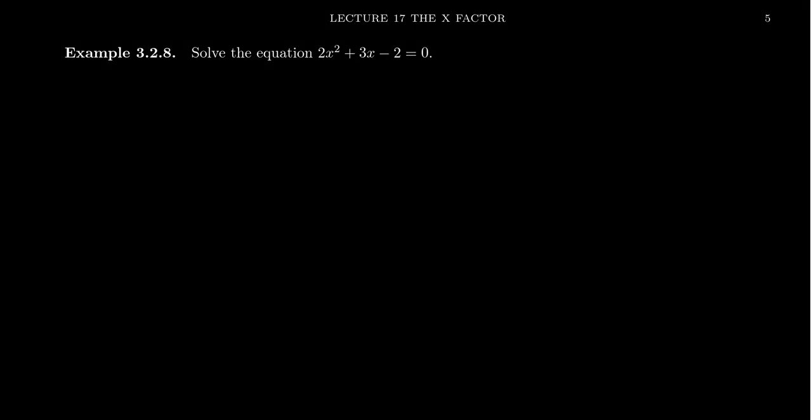We've learned some special factorizations like the difference of squares and a perfect square trinomial. We've seen that you can factor out GCDs, but it turns out that factoring quadratics can be a little bit more difficult than that.